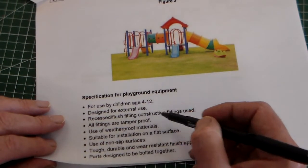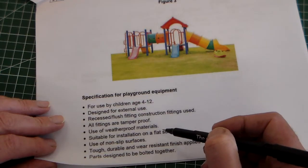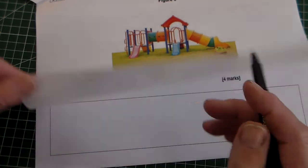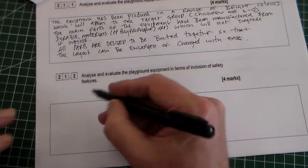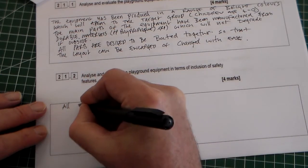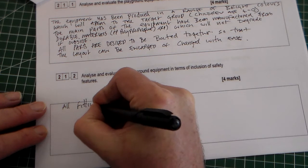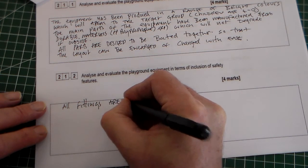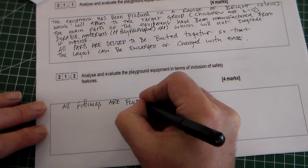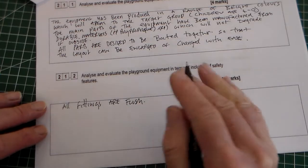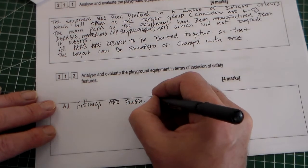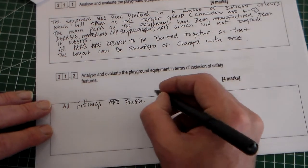Well we've got recessed fittings, we've got non-slip surfaces. I think they're the two most obvious. So if we say all fittings are flush. I mean by flush there's like countersunk fittings, fittings that are not going to stick out. And then we can say, so that would be one mark.